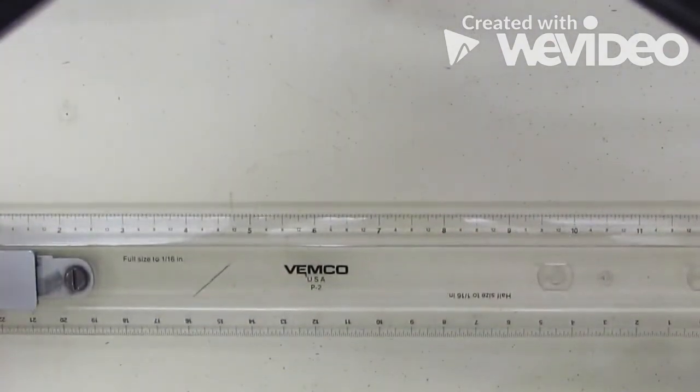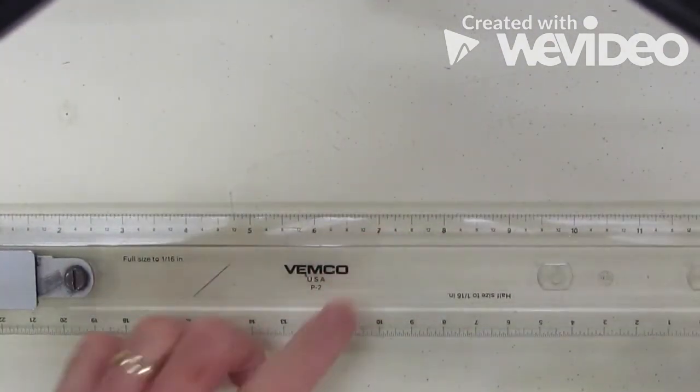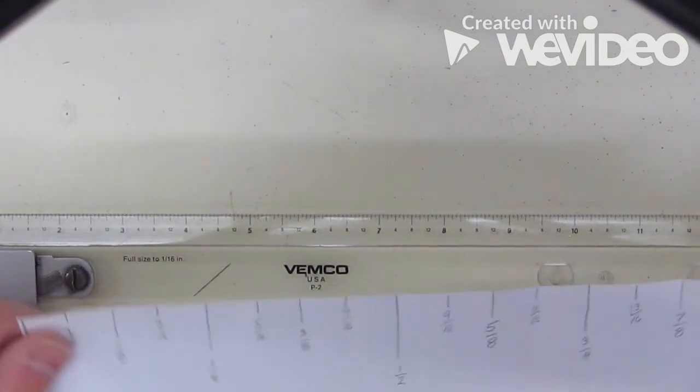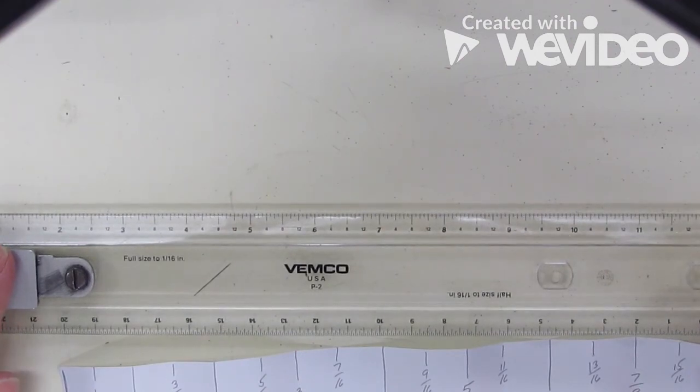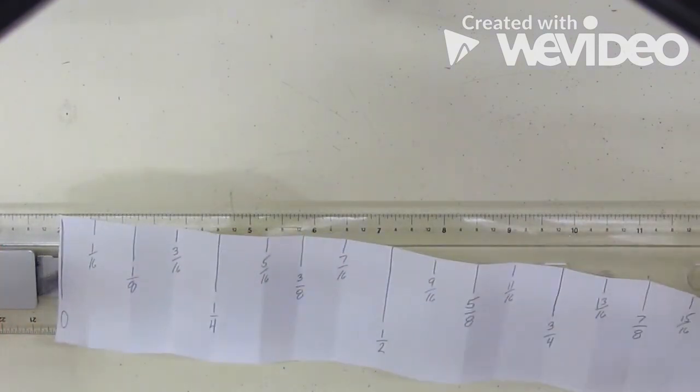And then we can compare that to our ruler, which is here, and we'll see that all of our numbers would match. We could use this as a roadmap to read this. There are going to be some more activities revolving around measuring, so I hope this works for you. And as always, please contact me with questions. Thanks.